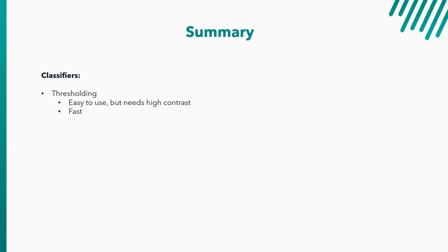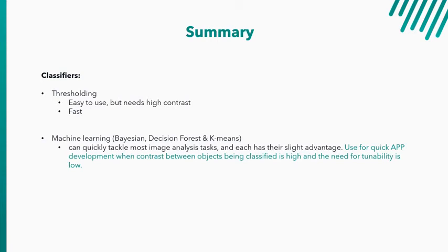One of the things I'd like to point out here is the ultimate control. So the nice thing about thresholding is if you go to a new study, and it's simply a difference in, let's say, nuclear intensity, or the marker of interest, its intensity has changed, but it's consistent. You can quickly fine tune that, and you don't have to train anything. It's just ready to go. The remaining machine learning classifiers, which are K-Means, Bayesian, and Decision Forest, everything other than deep learning, can quickly tackle most image analysis tasks. And each has a slight advantage. You can use these for quick app development when contrast between objects being classified is high and the need for tunability is low. So if you need a lot of tunability, I would go with the threshold, but otherwise, if you have high contrast, feel free to use any of the machine learning classifiers besides deep learning.